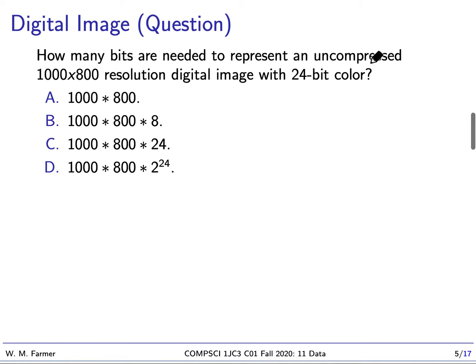Here's a question about digital images. How many bits are needed to represent an uncompressed 1000 by 800 resolution digital image with 24-bit color? I'll give you a few minutes to think of this and then we'll come back. Okay, welcome back. We have a digital image which is 1000 by 800. That means there's 1000 by 800 pixels. Each pixel is a little point of light, a little point of color light, and we're devoting 24 bits to that color of light. So here's the right answer. That's how many bits it would take to represent such an image.